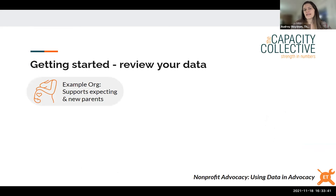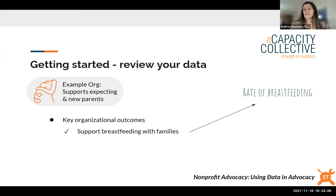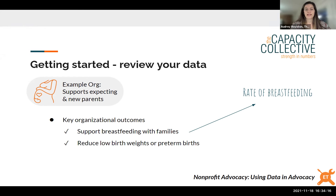Walking through these steps with an example: imagine an organization that supports expecting and new parents. First, identify key organizational outcomes — what you're working toward for your population. For example, if you support breastfeeding, you might track the rate of breastfeeding among clients. Another key outcome might be reducing low birth weights or preterm births, and tracking those metrics accordingly.